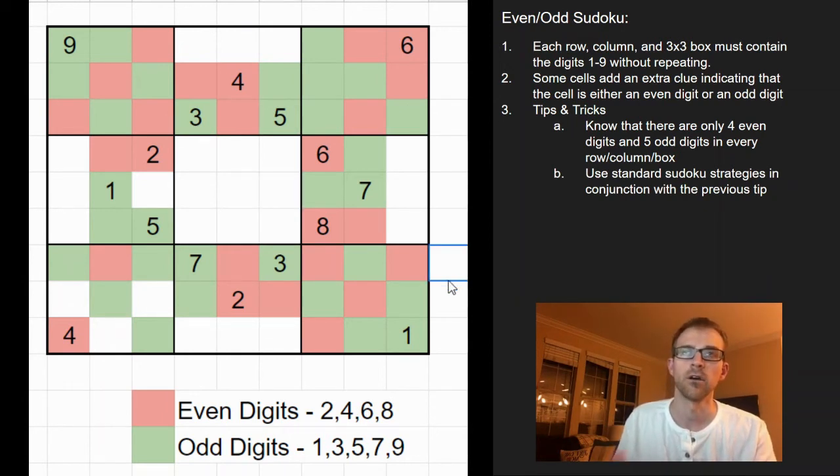You know, scanning all the numbers 1 through 9, looking for pairs, naked singles, X-wings, all of that fancy stuff.